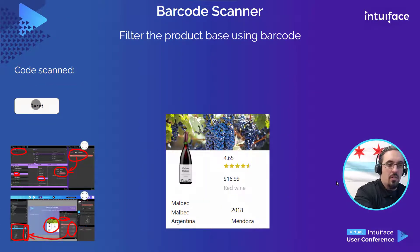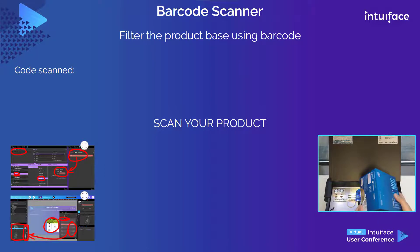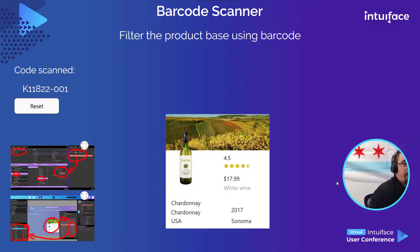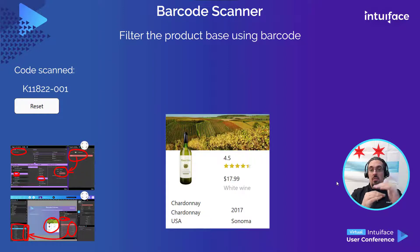If I reset the experience and scan another code — let's go with this one, that should be a Chardonnay — and we do get the Chardonnay. So if you want to display only one product at a time, this method works and is ideal because it's simple: you have a list, you filter, you display the result of the filter.